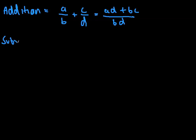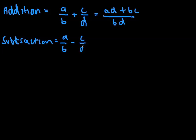Subtraction. So A over B minus C over D equals pretty much the same thing. We get AD minus BC over BD.